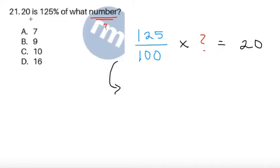20 is 125% of what number? So let's make the number equal to a question mark for now. 125%, we can write it as a fraction. We divide it by 100, so 125 over 100 times this question mark gives 20. Let's try to reduce this fraction first, 125 over 100.